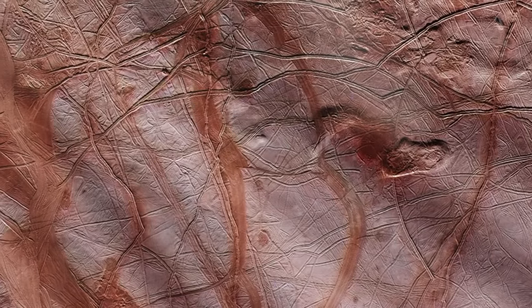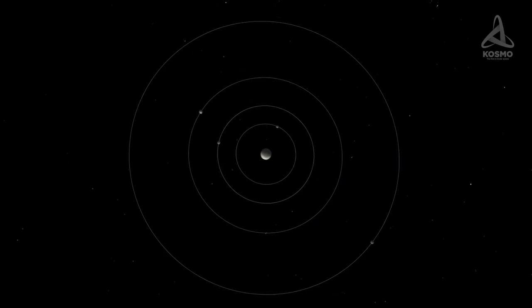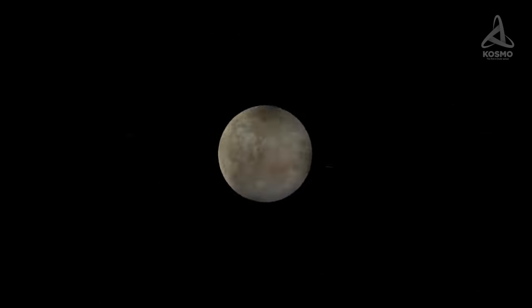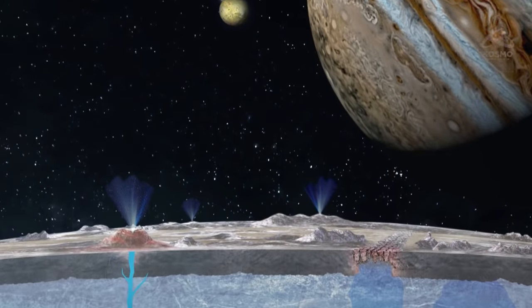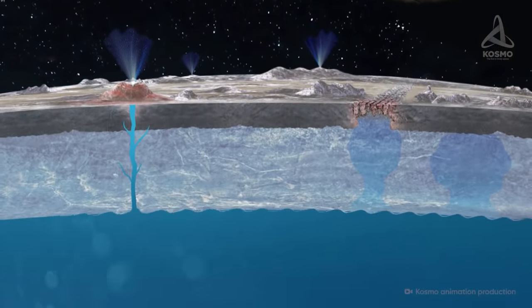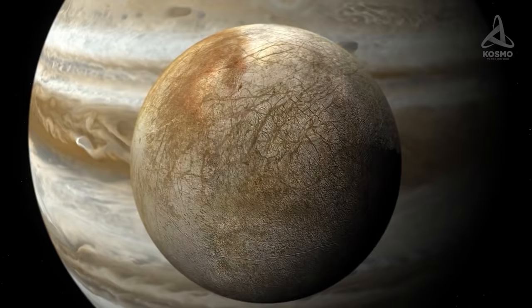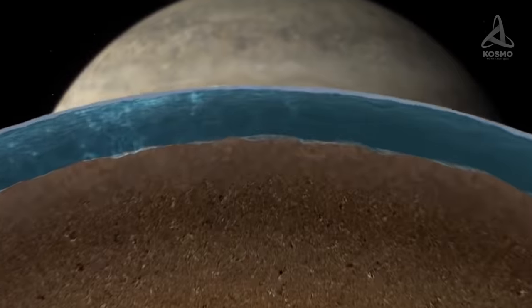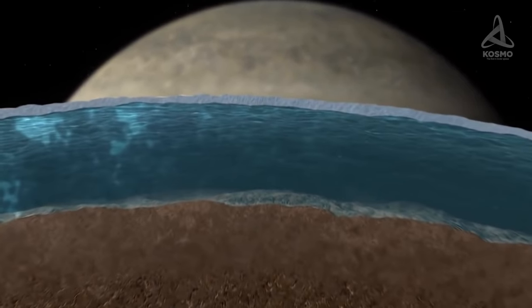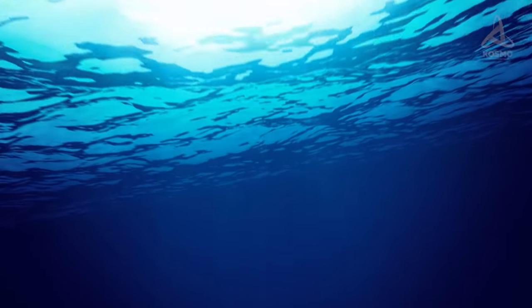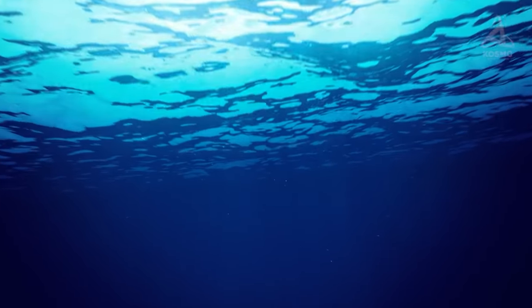This would have been impossible without a liquid layer between them. The massive neighbor exerts a strong influence over Europa by causing powerful tidal waves in its subsurface ocean. This way, the satellite is heated still more by internal friction. Estimates show that the temperature in Europa's interior is high enough for an ocean of water to be in liquid state. Its depth may reach a hundred kilometers, and its volume may be twice that of the global ocean on our Earth.